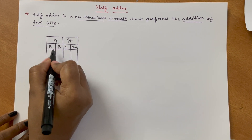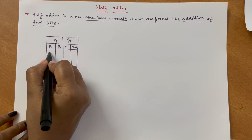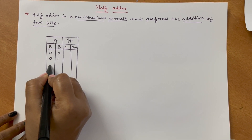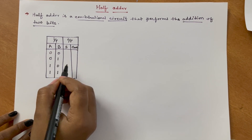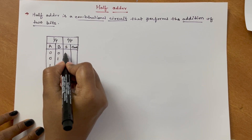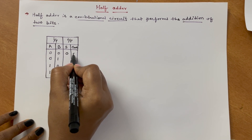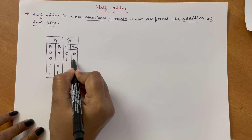For 2 bits there are 4 combinations possible: 0,0 — 0,1 — 1,0 — and 1,1. For 0 plus 0, the sum will be 0 and carry will be 0. For 0 plus 1, sum is 1 with carry 0.